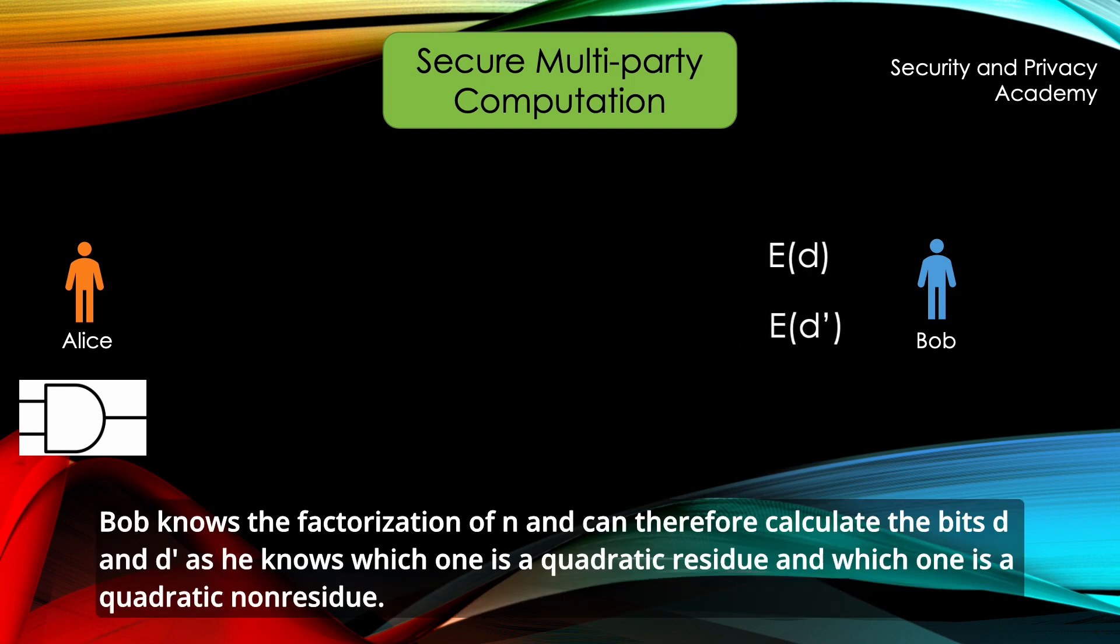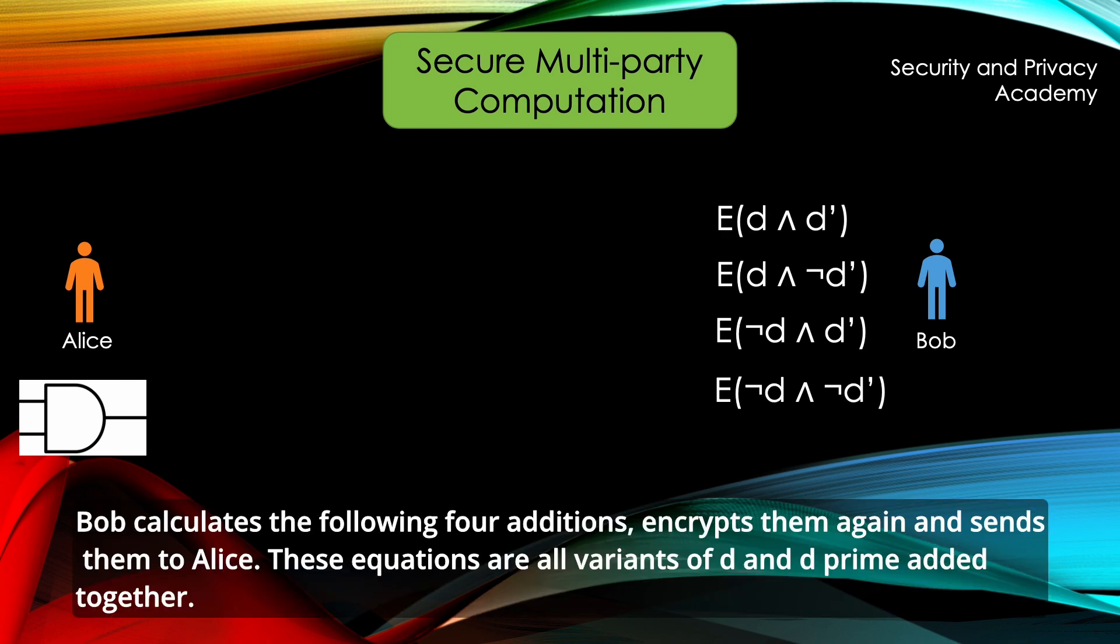Bob knows the factorization of N, P and Q and can therefore calculate the bits D and D' as he knows which one is a quadratic residue and which one is a quadratic non-residue. Bob calculates the following four additions, encrypts them again and sends them to Alice.